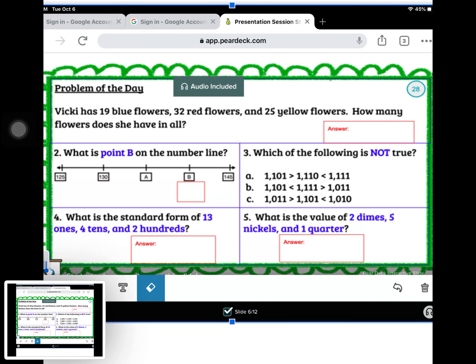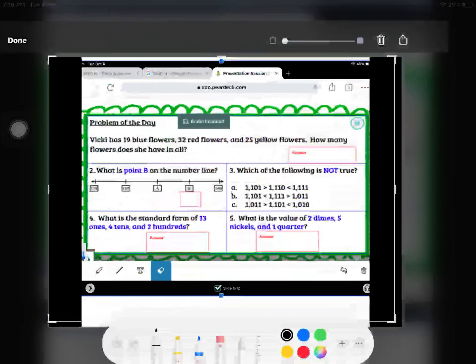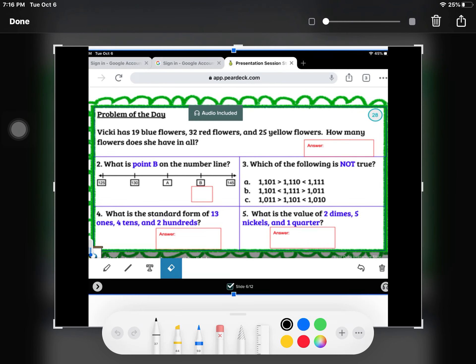Okay boys and girls, we're going to go over our spiraling from yesterday. So on number two it says, what is point B on the number line? We have 125, 130, a missing number, a missing number, and 145.